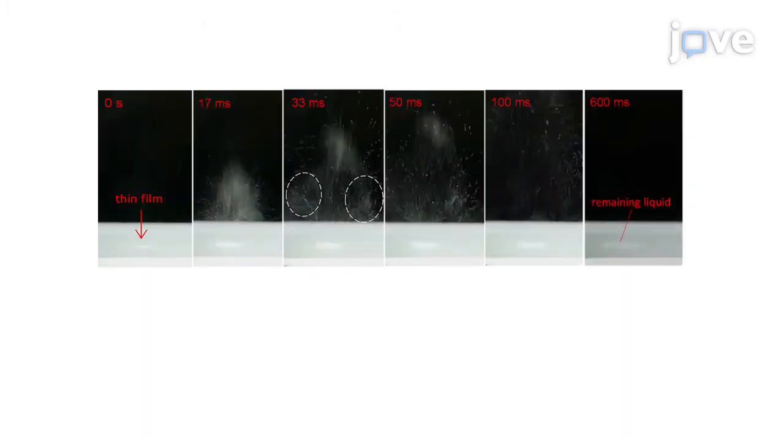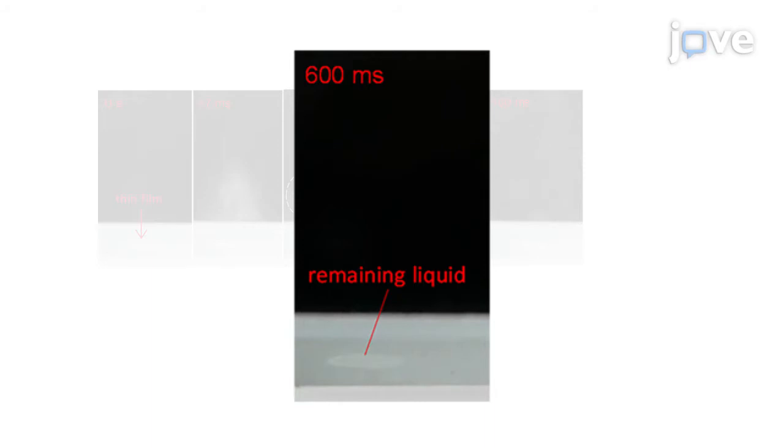In this sequence, a thin film of lavender is atomized on an uncoated surface. Strong atomization occurs at the center of the liquid, but not the edge. In the end, part of the liquid remains.